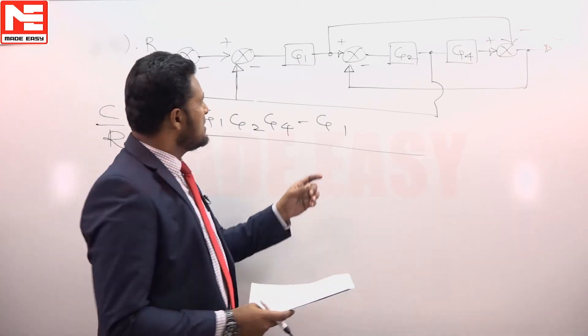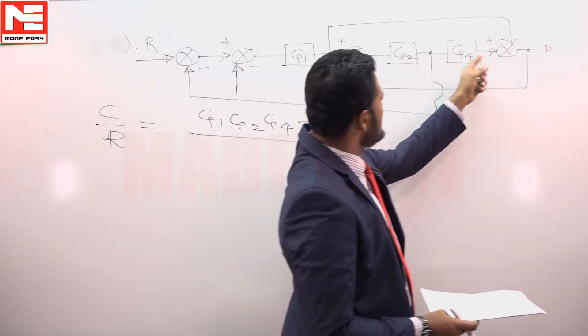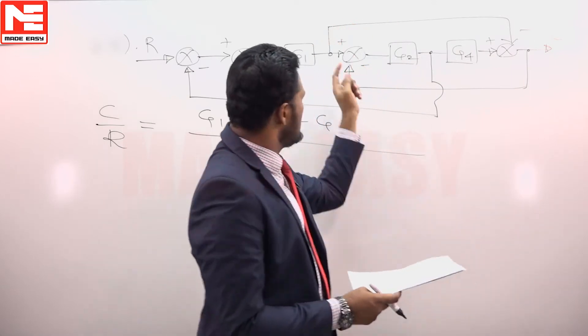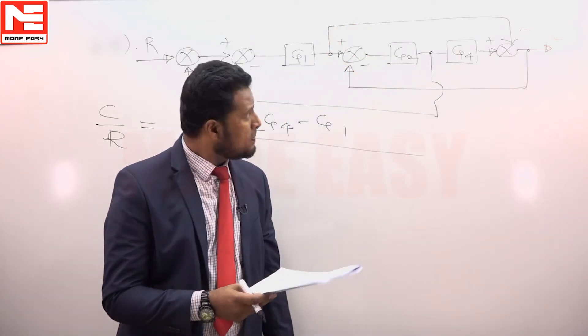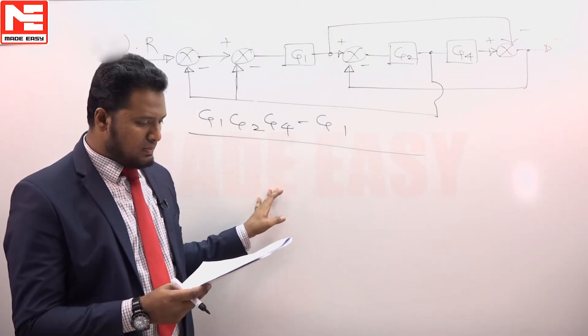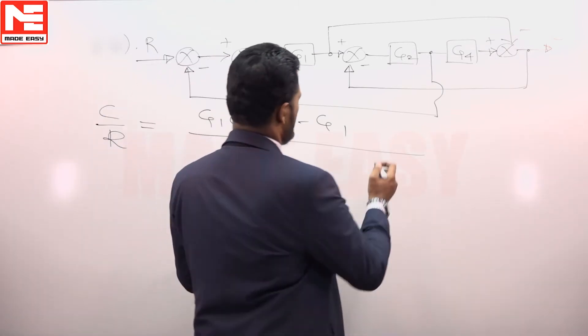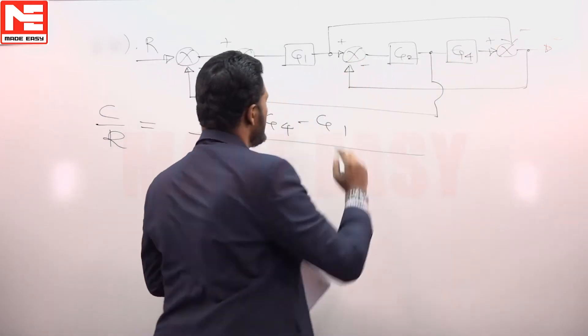One loop is of the gain G2 G4 minus 1. Another loop is of the gain minus G2 G4. Minus G2 G4 is one loop gain.